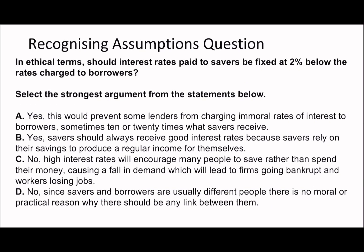The fourth question is actually a hidden clause question: in ethical terms, should interest rates paid to savers be fixed at two percent below the rates charged to borrowers? The important thing we're looking for is something about ethics. Option A says this will prevent some lenders from charging immoral rates of interest to borrowers — sometimes 10 or 20 times what savers receive. I can't see anything to immediately rule that out.